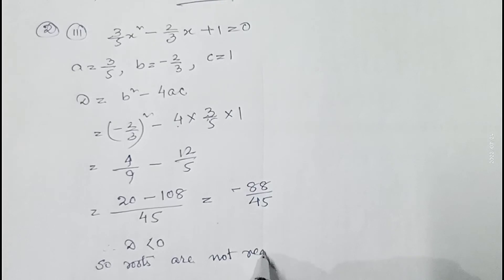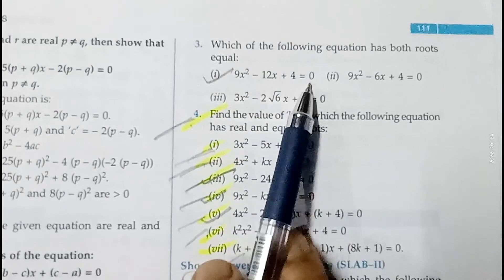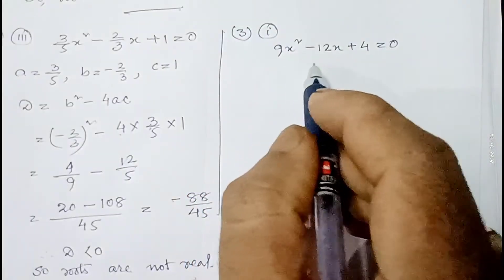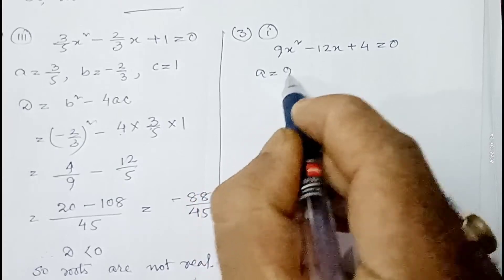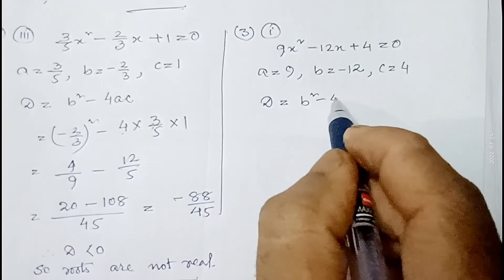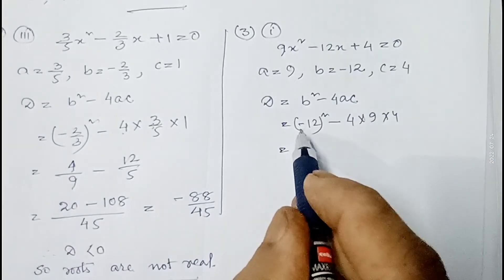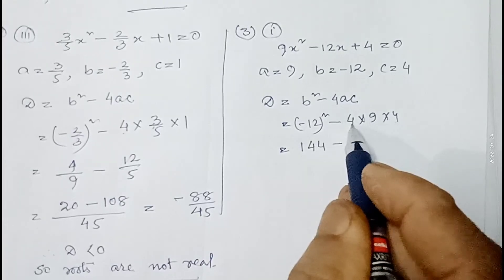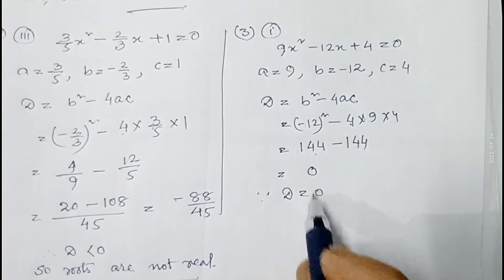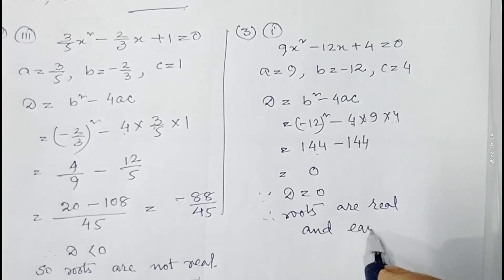In question number three, we must find which equations have both roots equal. For equal roots, discriminant = 0. First equation: 9x² - 12x + 4 = 0, so a = 9, b = -12, c = 4. D = (-12)² - 4×9×4 = 144 - 144 = 0. Since D = 0, roots are real and equal.